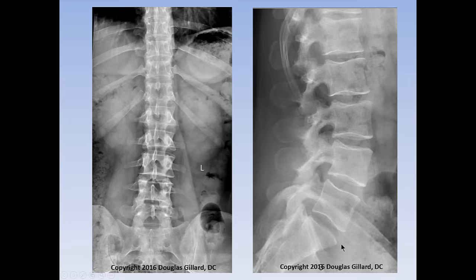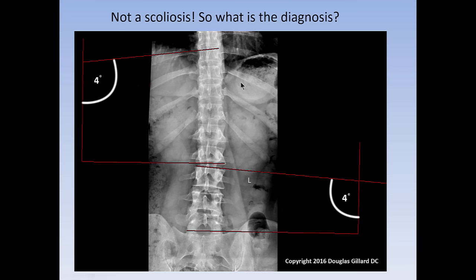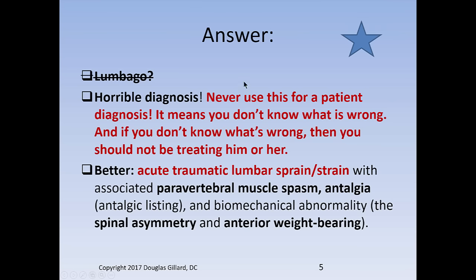Everything looks good overall — a little bit of anterior weight bearing. For those who don't believe me, I drew some lines: it's four degrees, that's not a scoliosis. The diagnosis is not lumbago — I don't like that word. That means you don't know what the diagnosis is, and if you don't know what's wrong with a patient, you certainly shouldn't be treating them. Based on the history: an acute traumatic sprain-strain with associated muscle spasm, a little antalgic listing, and some biomechanical abnormalities such as spinal asymmetry and a little anterior weight bearing. That is a good scientific, smart diagnosis.